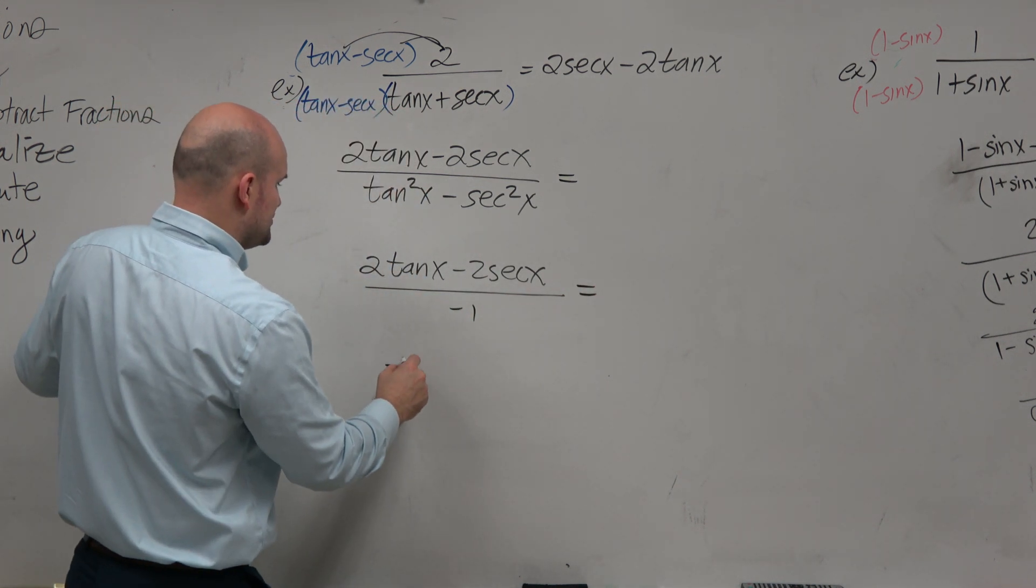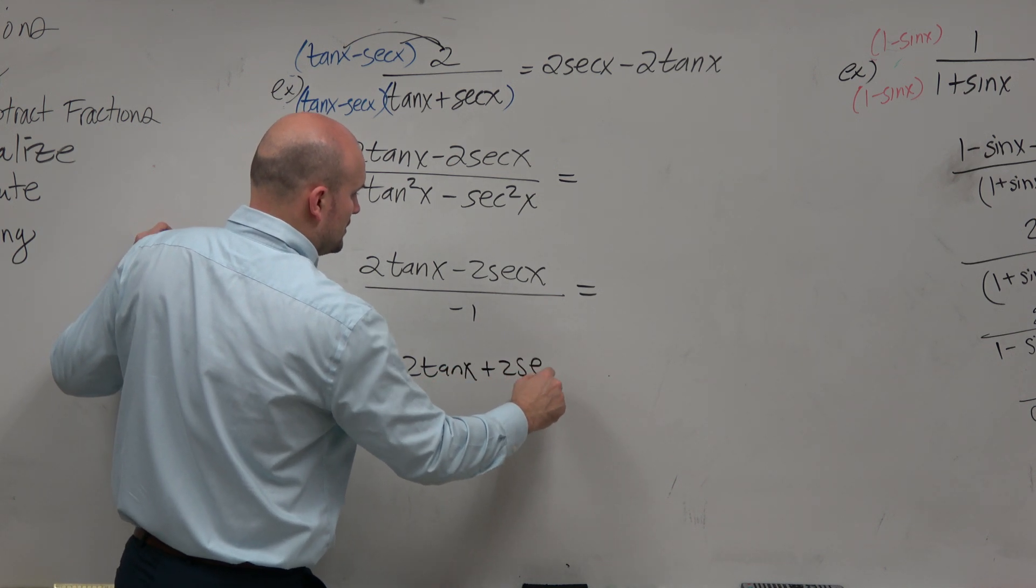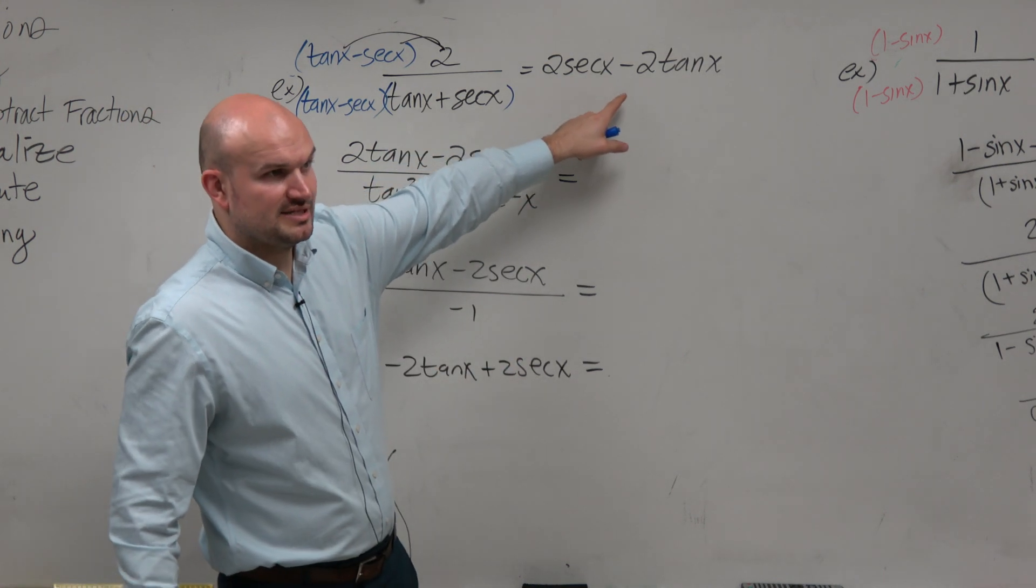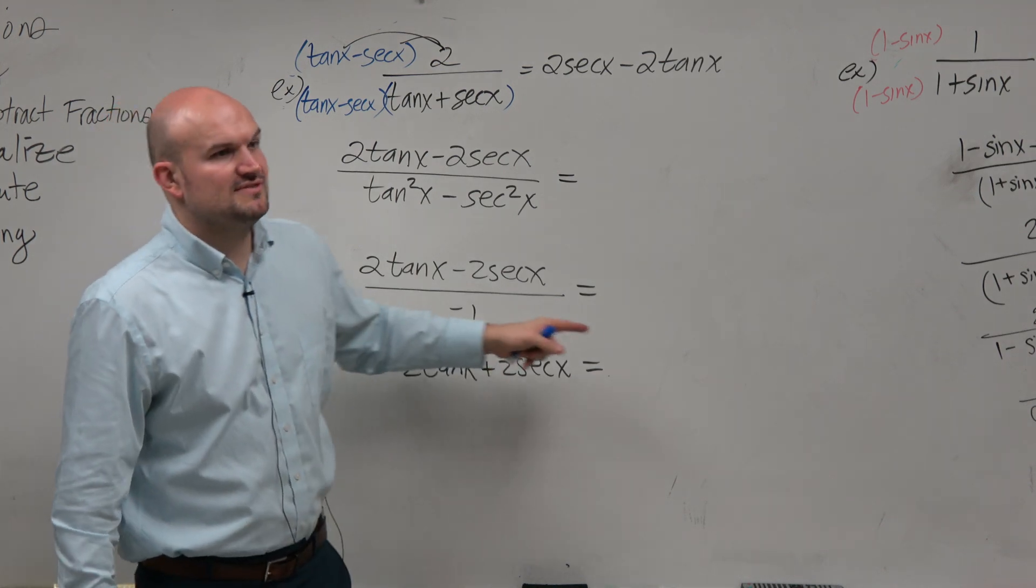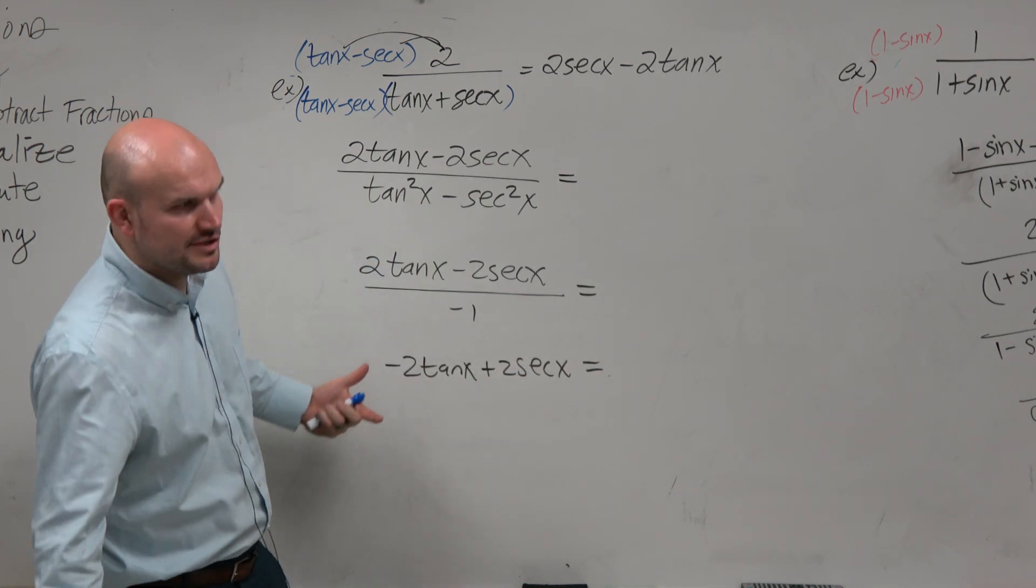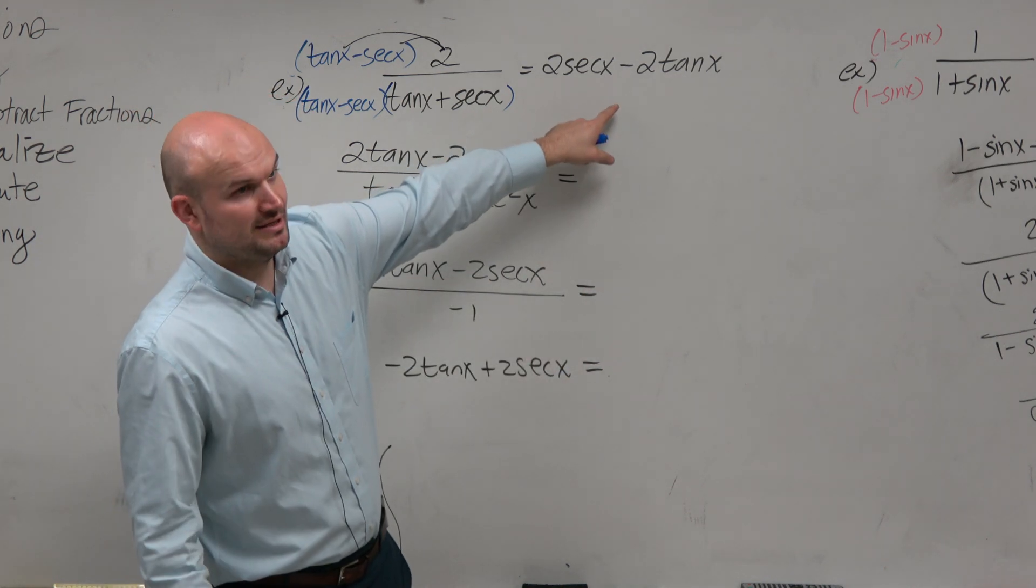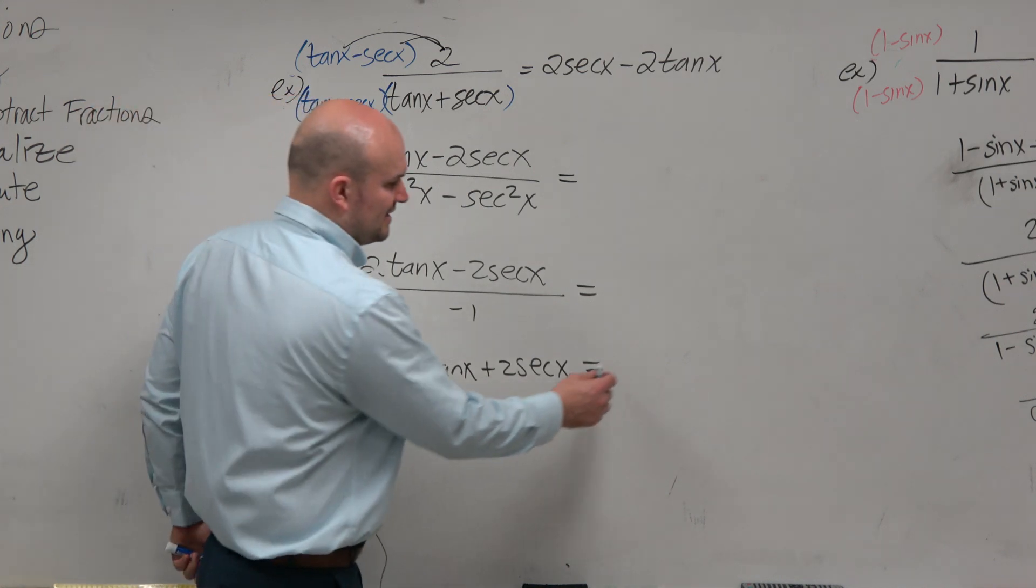And then I can just distribute this to negative 2 tangent of x plus 2 secant of x. Now, do I have to rearrange it so it looks nice and pretty like that? No, it's perfectly fine. It's like negative 2 plus 5, rather than 5 minus 2. You don't need to rearrange it. This is a preferred method of writing it - usually we like to write the positive in front. But it's OK. As far as verifying the identity, you're good.